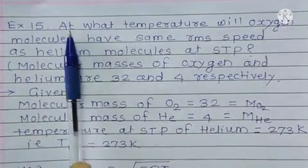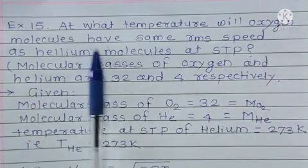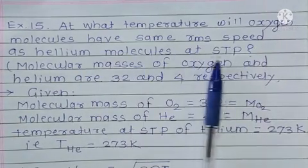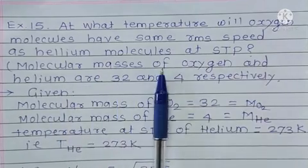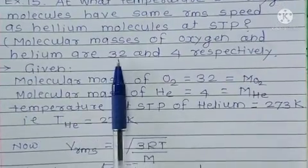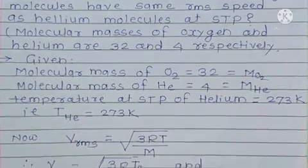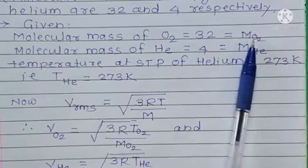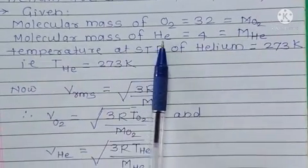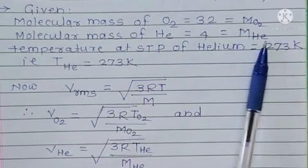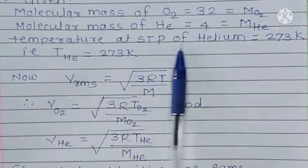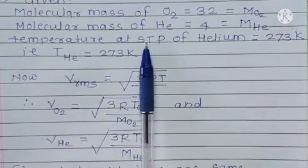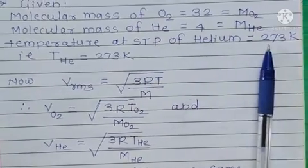Example number 15: At what temperature will oxygen molecules have same RMS speed as helium molecules at STP? Molecular masses of oxygen and helium are 32 and 4 respectively. Given: molecular mass of oxygen M of O2 is 32, molecular mass of helium M of He is 4, and temperature at STP of helium is 273 kelvin.